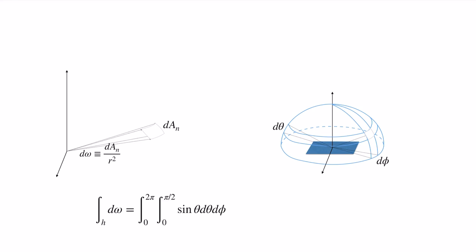To integrate over the entire hemisphere, we integrate the zenith angle θ from 0 to π/2 and the azimuth angle φ from 0 to 2π. That covers the entire hemisphere. Evaluating this integral, we find that a hemisphere contains 2π steradians — steradians being the unit for solid angle, just as radians is the unit for our normal angle.